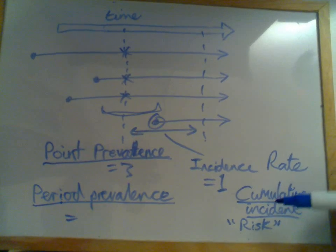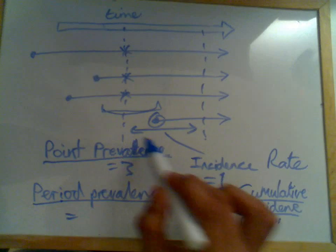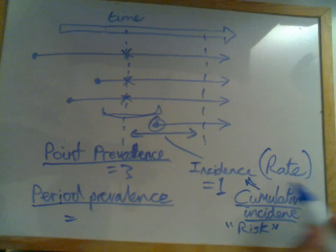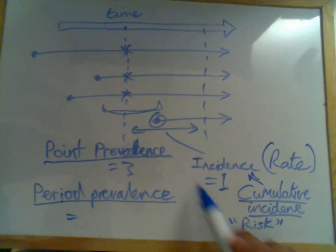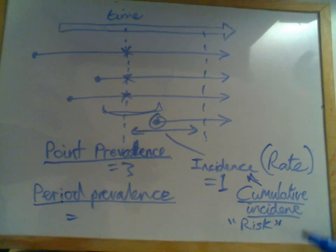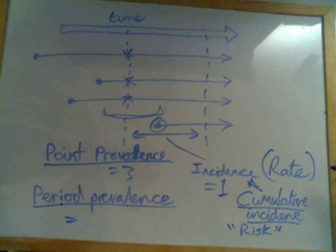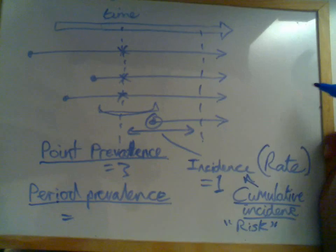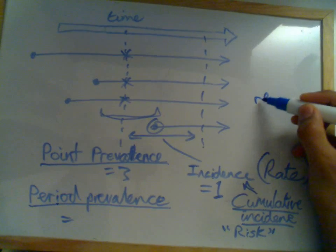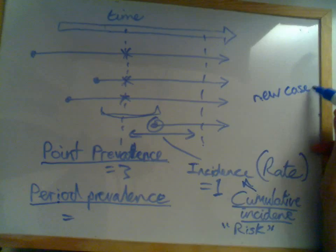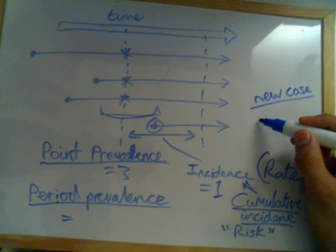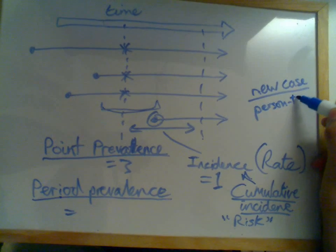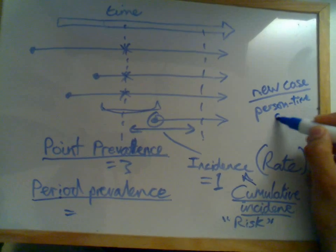Now cumulative incidence is the number of new cases arising, accumulating. So actually, I mean, this is a little bit unhelpful, but this would be a cumulative incidence measure. Whereas incidence rate would be new cases arising.